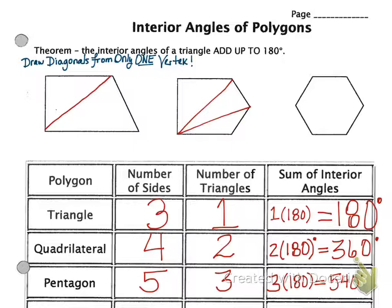Now, let's do the six sides, which is a hexagon — six sides. How many triangles? If you draw your diagonals, you have four triangles. How do you get four? Six minus two is four. Six sides minus two every time gives us the number of triangles. And four triangles times 180 gives us 720.